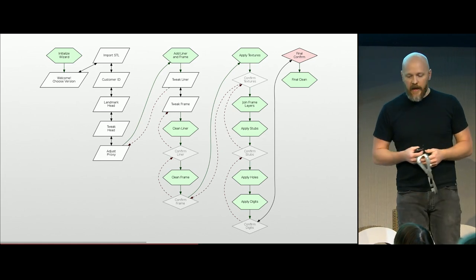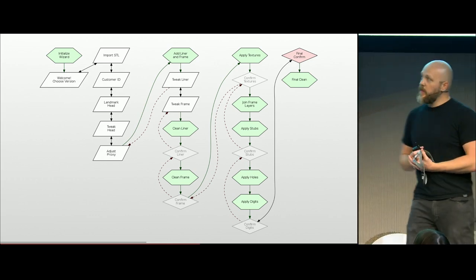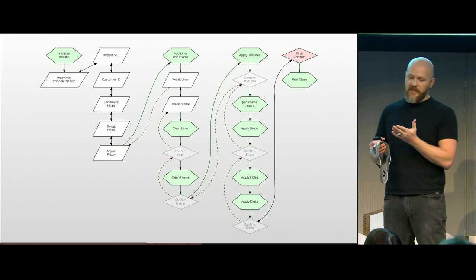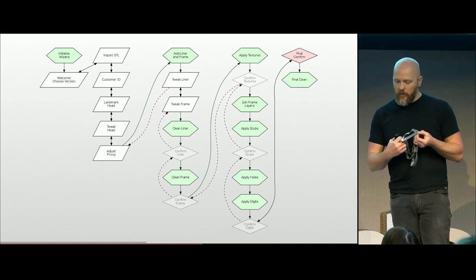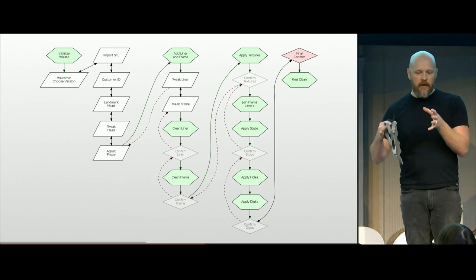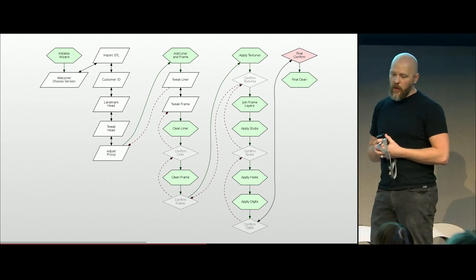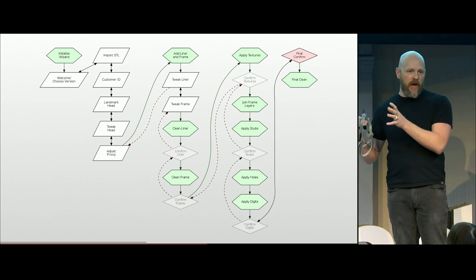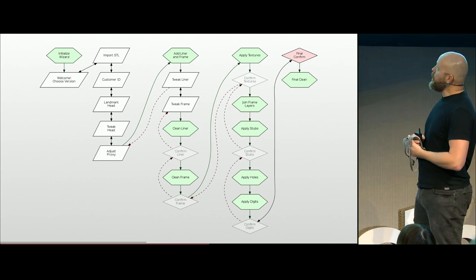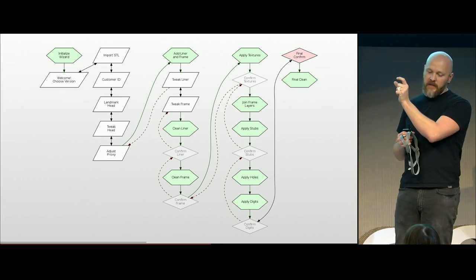We took those ideas and reduced from about 28 steps down to about 24. The square quads in the flowchart represent human interaction: selecting the STL file, identifying the customer by ID number, landmarking different places on the head — very simple and clear-cut. The hexagons represent fully automated steps: adding modifiers, setting their parameters, applying them, selecting and deleting faces, joining and bridging — all handled automatically.